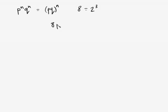You get 8p cubed, q cubed, and that's going to be equal to 2 cubed, p cubed, q cubed, which is equal to the quantity 2pq, the quantity cubed.